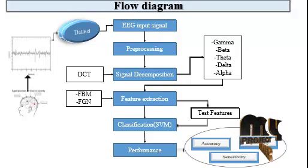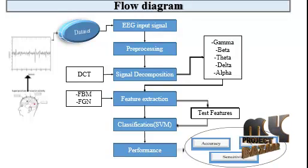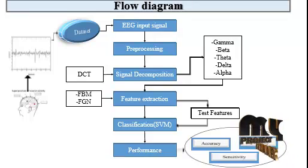Then, EEG signal is decomposed into five brain rhythms: Gamma, Beta, Theta, Delta and Alpha.